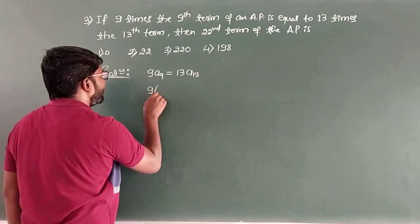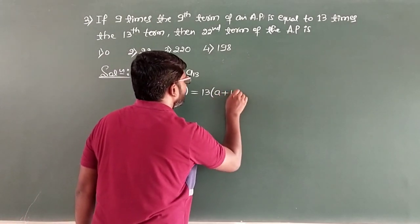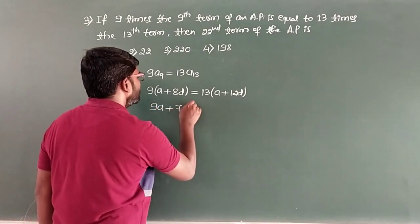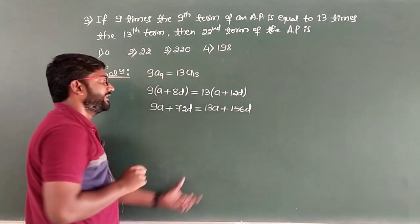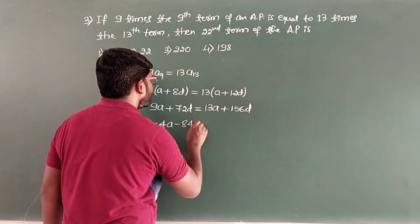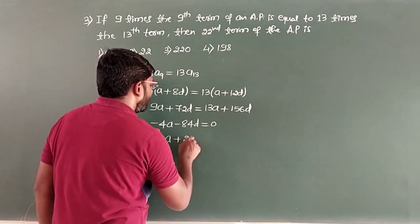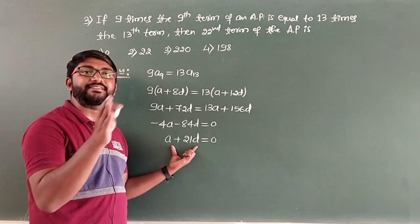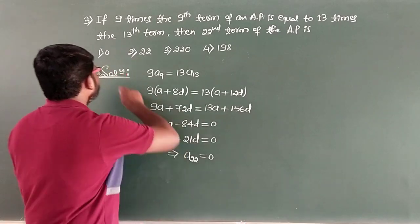So 9(A + 8D) = 13(A + 12D). Expanding: 9A + 72D = 13A + 156D. Taking terms to the left: −4A − 84D = 0. Dividing every term by −4 gives A + 21D = 0. This is nothing but the 22nd term of the AP, so A22 = 0. Option 1 is the correct answer.